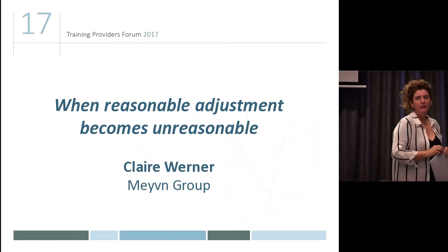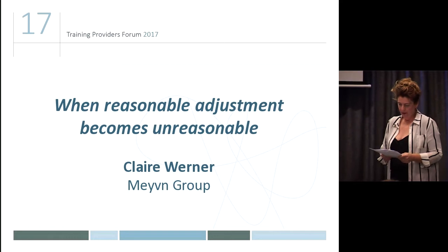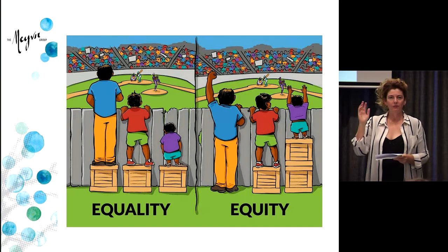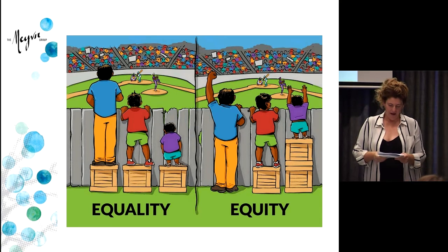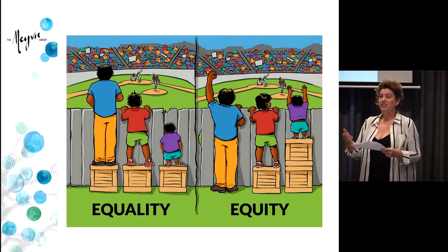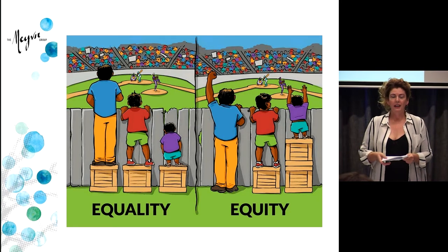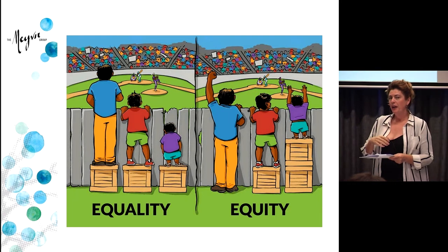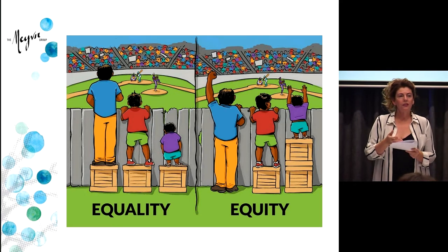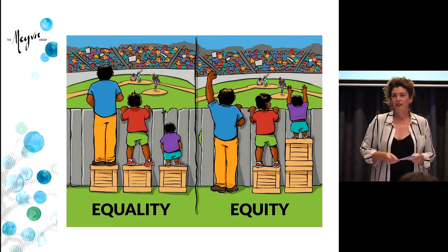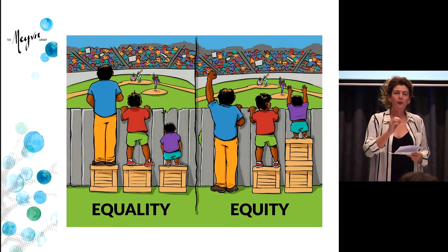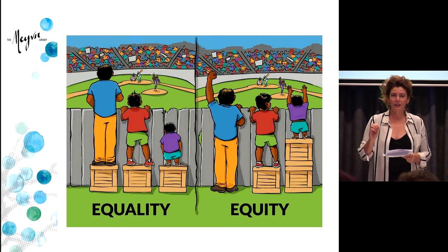When we think about reasonable adjustment, what often happens is we think about equality. But really what we should be thinking about is equity. This diagram shows nicely what the difference between those two things is. The outcome — actually being able to see over the fence — is what we want to achieve, and it's the way we get to that outcome that we are going to adjust. The outcome is fixed, but the way we get there can be variable. That's a really important thing to understand.